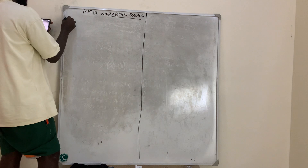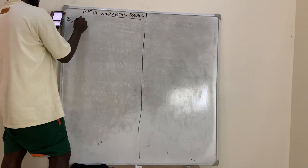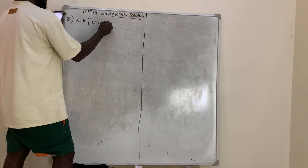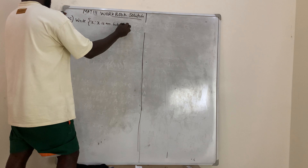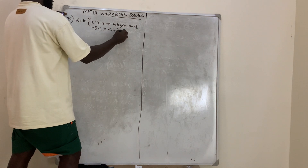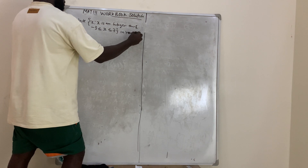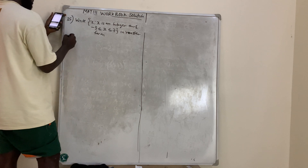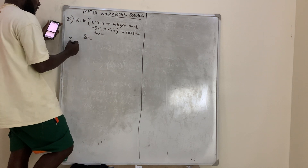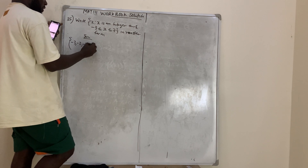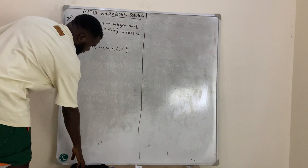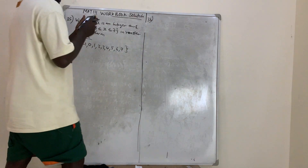Question number 35: Write {x such that x is an integer and -3 ≤ x ≤ 7} in roster form. Solution: Roster form simply means to list the elements. From -3 to 7, the set is: {-3, -2, -1, 0, 1, 2, 3, 4, 5, 6, 7}. That is the roster form and the answer to question 35.